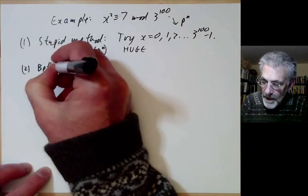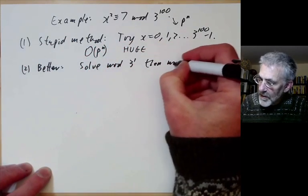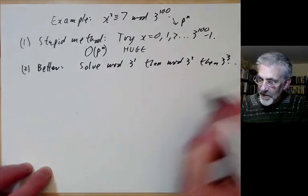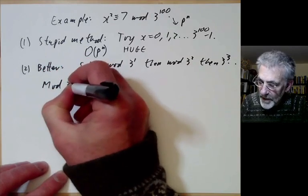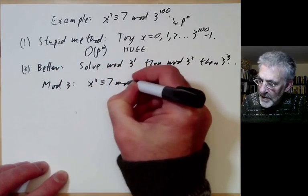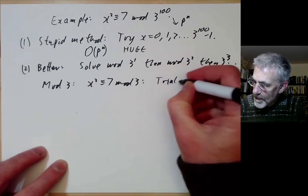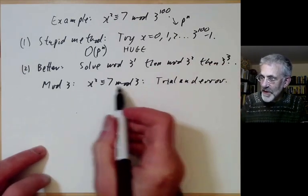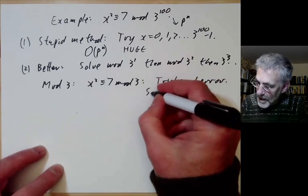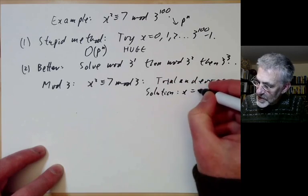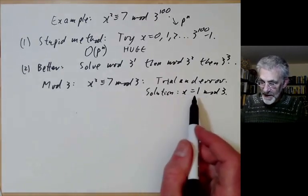A slightly better method: first solve mod 3, then mod 3², then mod 3³, and so on, gradually working up. To solve x² ≡ 7 mod 3, we use trial and error — the prime is small — and find the solution x ≡ 1 mod 3. There's another solution x ≡ −1 mod 3, but let's take x₁ = 1 mod 3.